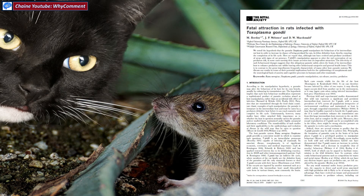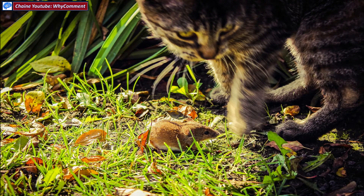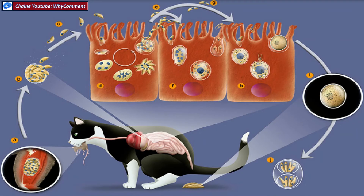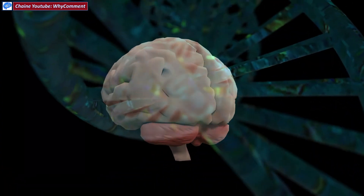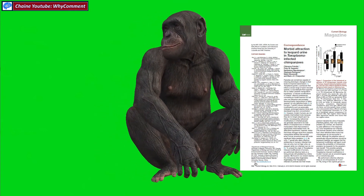En cas d'infection par le sida ou d'autres maladies qui diminuent la réponse immunitaire, le parasite peut se réactiver. En 1994, un chercheur épidémiologiste de l'Université d'Oxford a mis en évidence un changement du comportement du rat présentant des kystes du parasite : il recherche la compagnie des chats et éprouve même une certaine attirance, au lieu d'éprouver un sentiment de danger. C'est une stratégie très avantageuse pour le parasite, qui peut ainsi finir son cycle de développement et se reproduire sexuellement dans l'intestin du félin. Selon certains chercheurs, le parasite agirait à l'échelle moléculaire, au niveau de l'ADN des cellules du cerveau des mammifères, pour modifier le comportement.